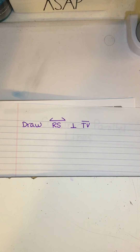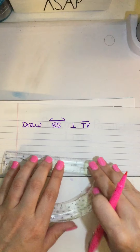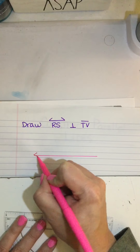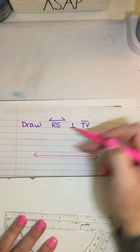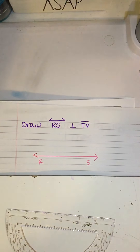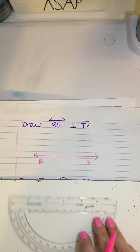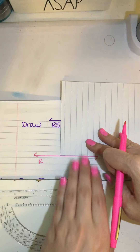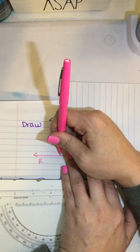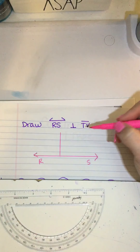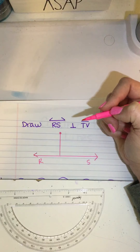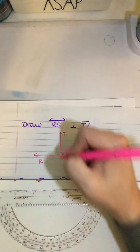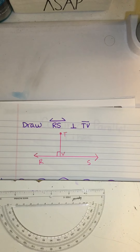First off, you start with a line — indicate it with arrows and label it RS. To make a perpendicular line, I took my 90 degree tool, lined it up right against that line, and then traced along the edge to create that perfect 90 degree angle. Since it's a line segment I want to indicate the end with a dot. It meets down here, so I label it TV, and I make a 90 degree sign right there — that means the other side is also 90 degrees.